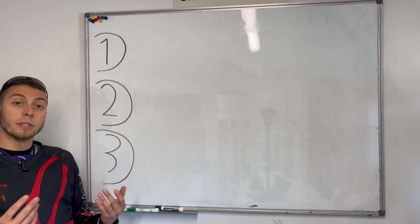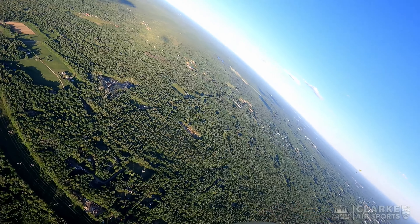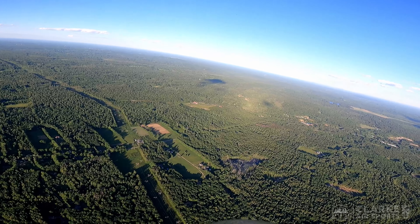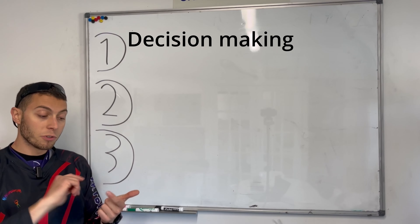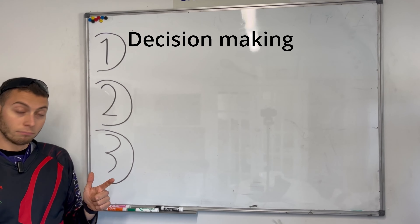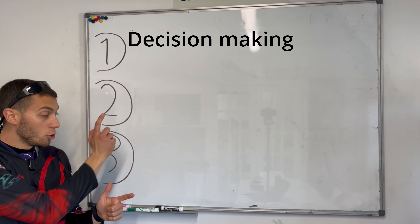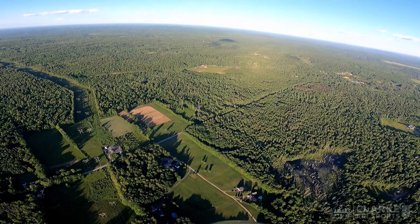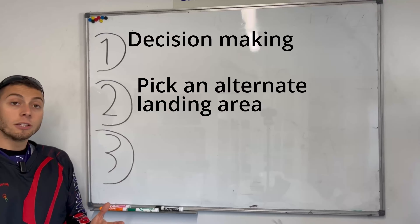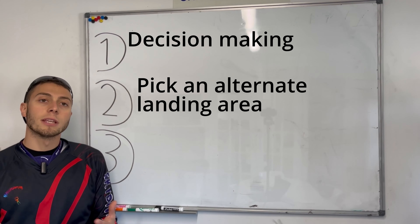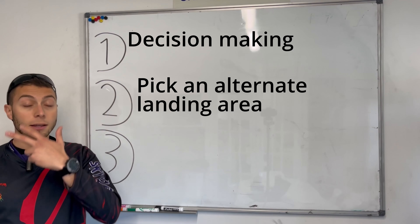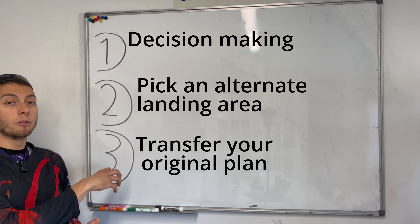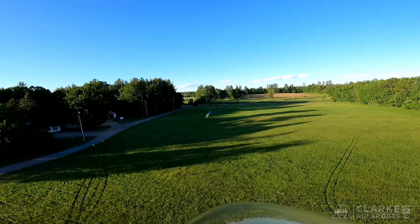So what are the three parts of landing out? First, you need to make a decision that you're not going to land at the drop zone anymore but somewhere else. Second, you have to pick a new alternate landing area. And once you've picked your alternate, the last thing is to pick your pattern that you planned at the drop zone and copy it over into your new landing area.